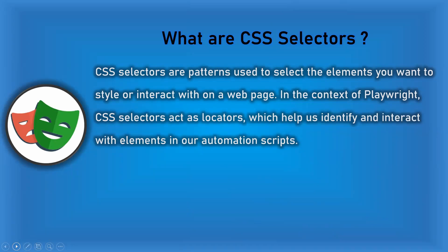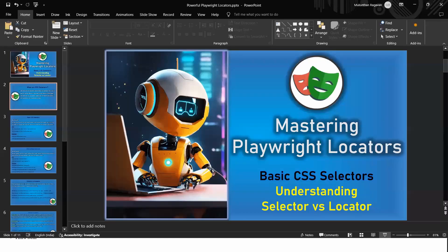It is a very general concept because as a web developer you will create or generate HTML pages, but you want to make styling over the HTML and refer that in your stylesheet. In the stylesheet you want to refer some element to style it, and in the context of Playwright, CSS selectors can also act as a locator which will help us to identify, interact, and make automation.